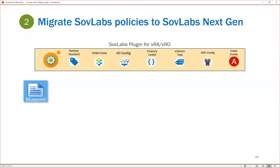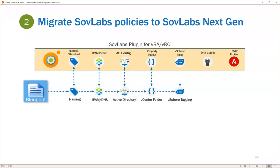When we look at transitioning from the current VRA 7 platform into our SovLabs.next platform, when somebody requests a blueprint, the modules get invoked. The appropriate policies for that deployment are invoked — a machine name might be generated, the appropriate IPAM profile gets assigned, a network gets assigned, an IP address gets assigned along with all that relevant network information, and that can get registered in DNS. The AD piece and other components such as DRS, Ansible Tower, and so forth also get handled, all through the lifecycle of the deployment of that machine.